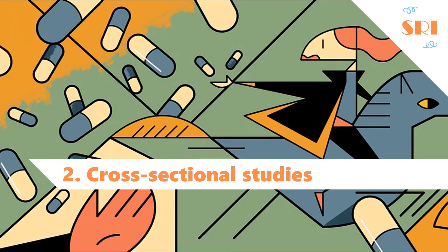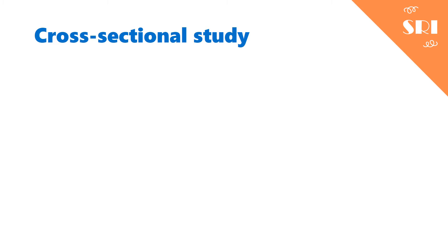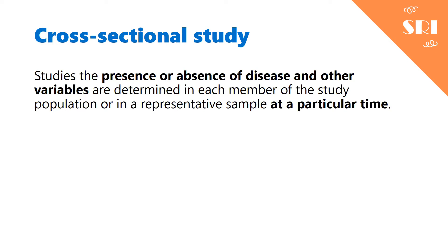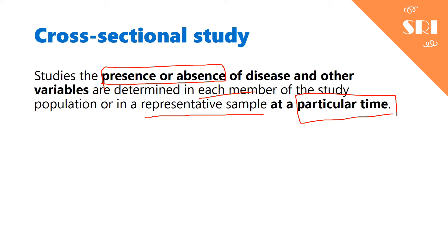The second type of observational studies is called cross-sectional studies. A cross-sectional study basically studies the presence or absence of disease and other variables in each member of the study population, or in a representative sample of the study population, at a particular point in time.